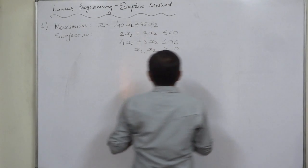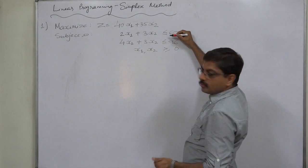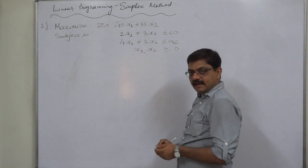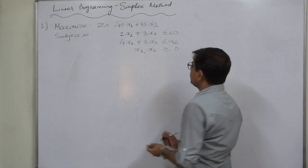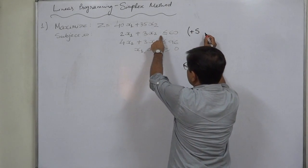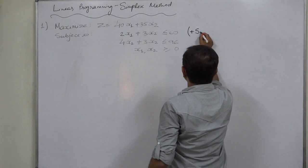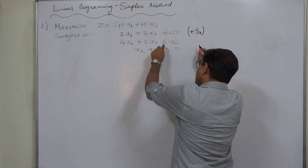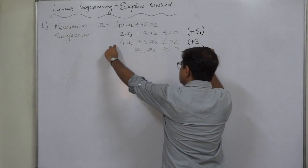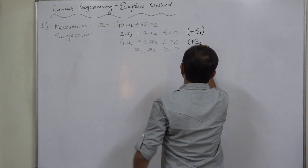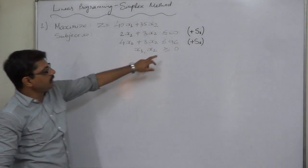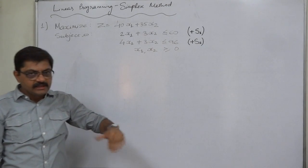Based on the sign of the inequality, we need to convert it into equality. Since the sign is less than or equal to, as discussed in our previous lecture, we add a slack variable. For inequality number one we add s1, and for inequality number two, which also has a less than or equal to sign, we add slack variable s2.